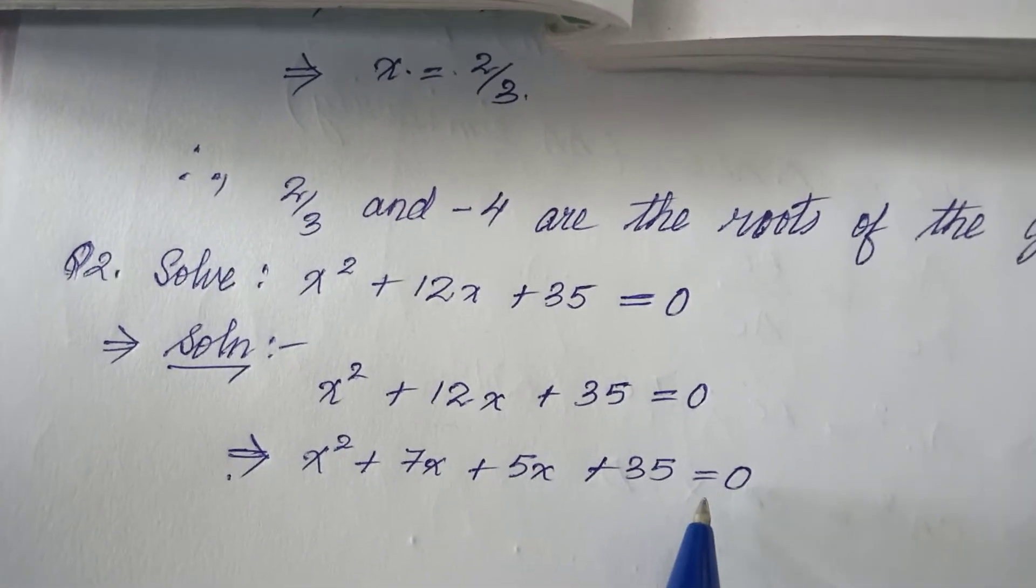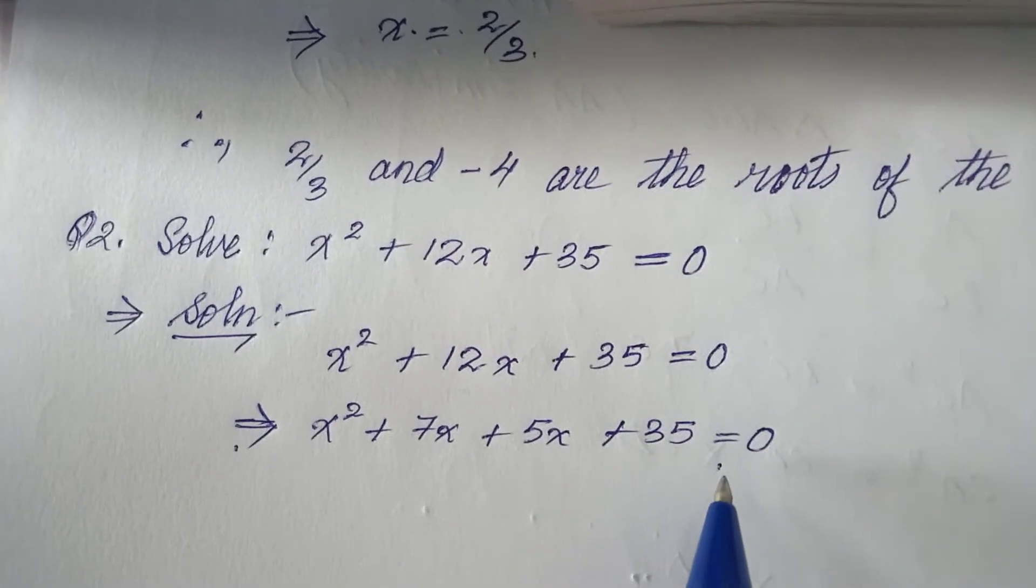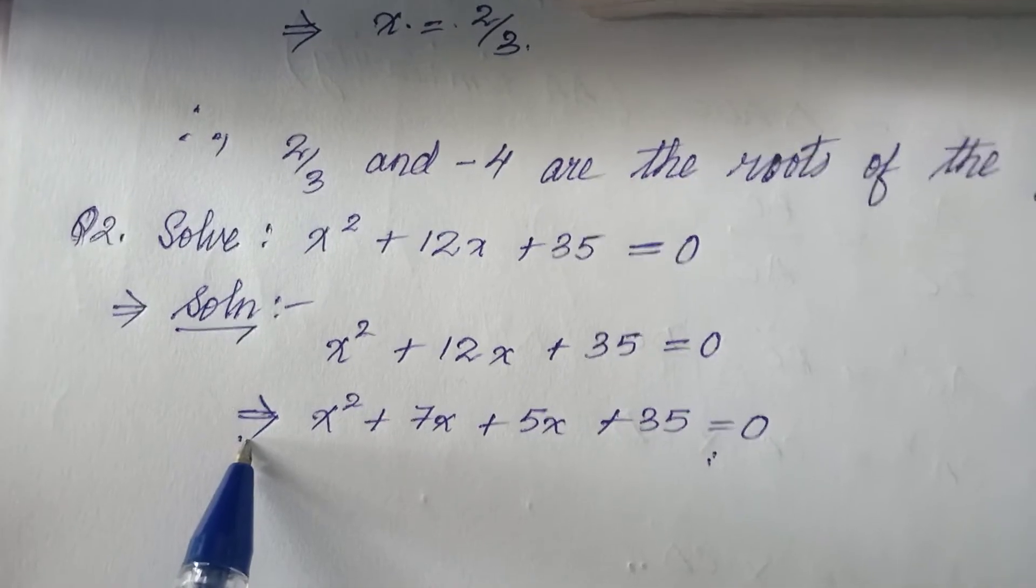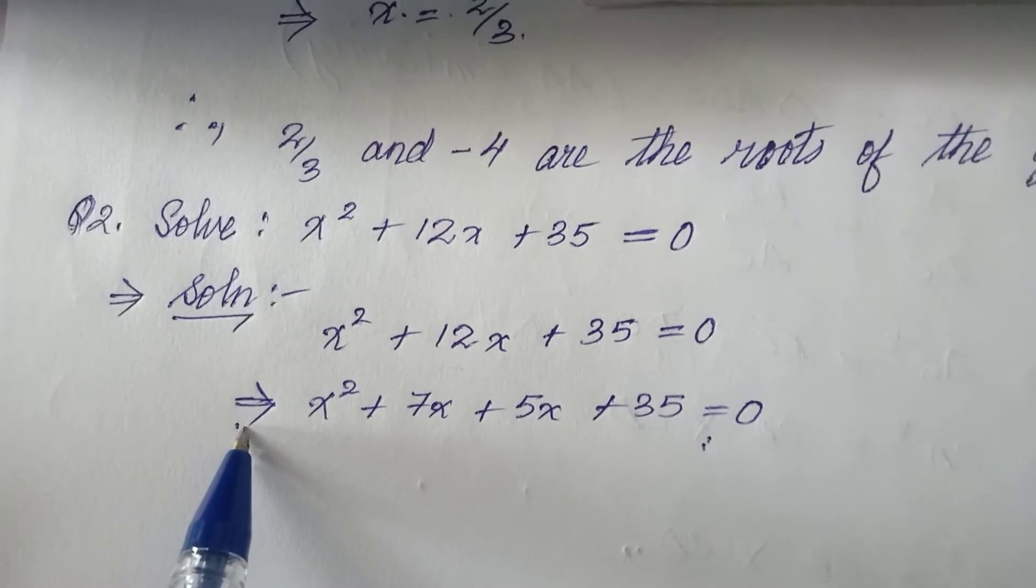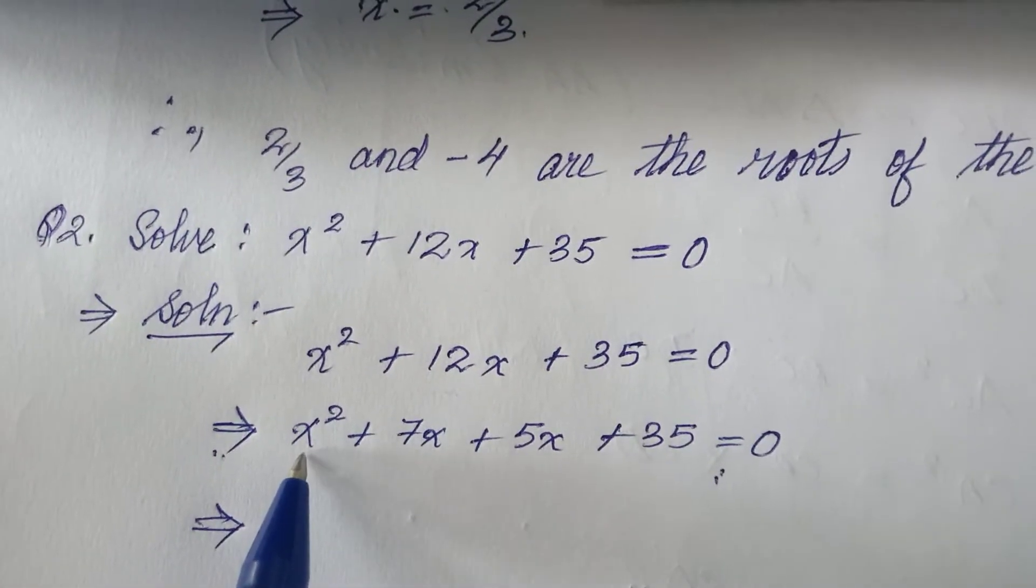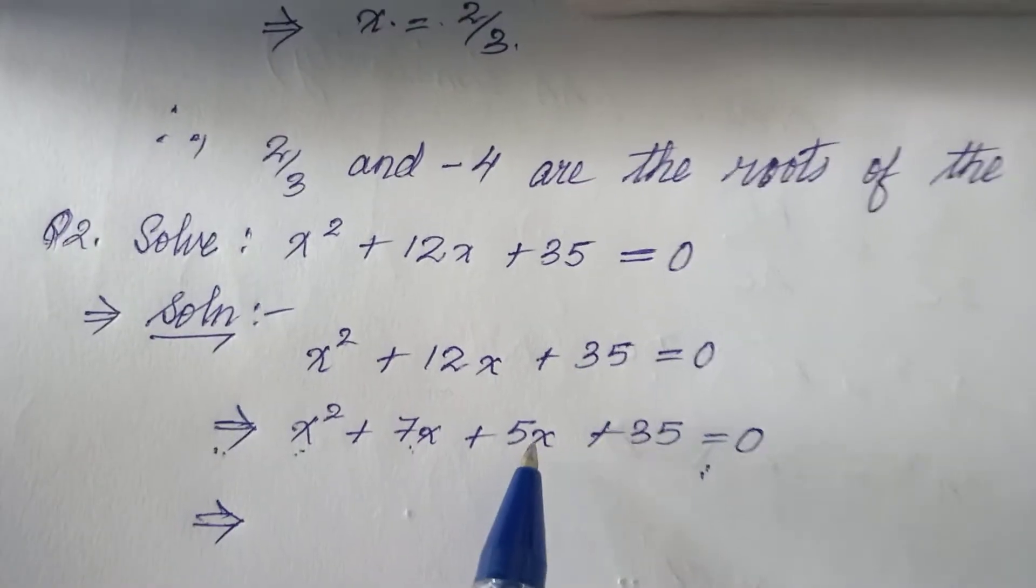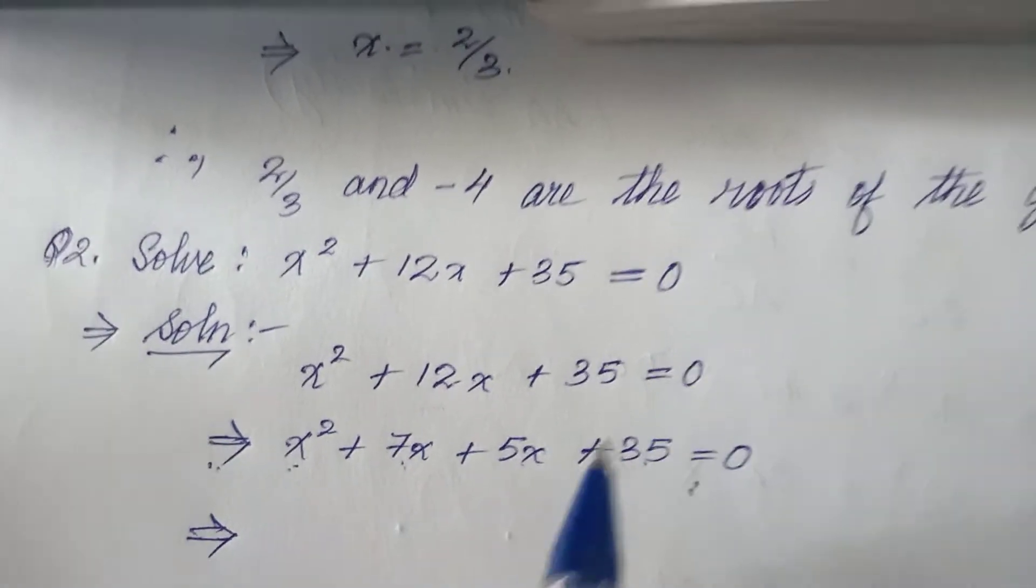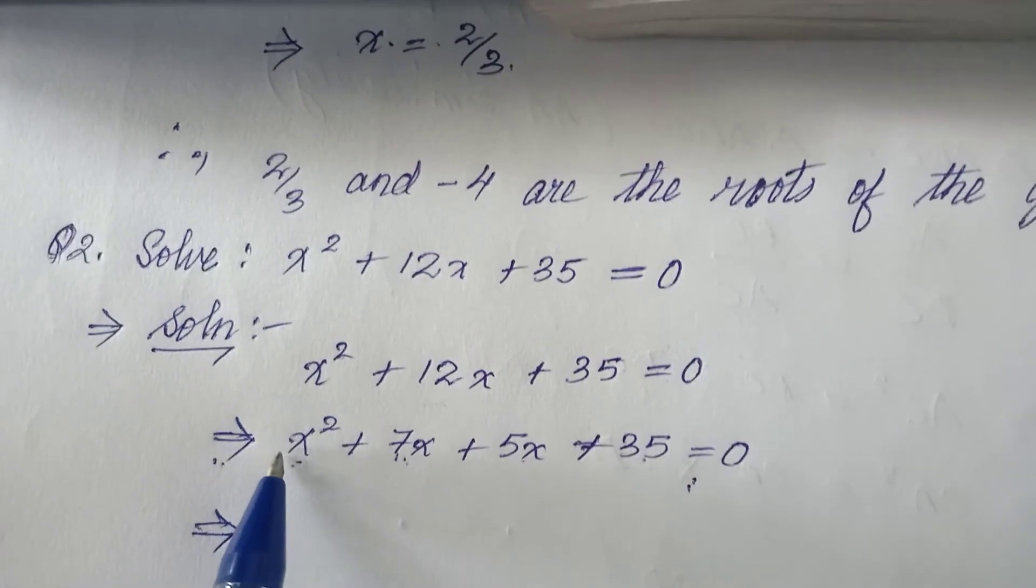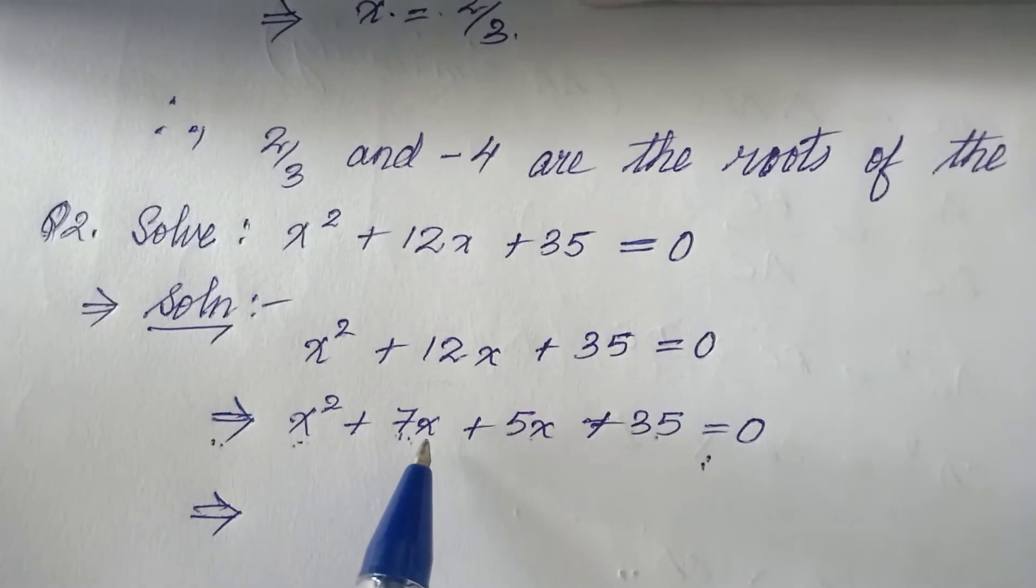Which implies - you have to use 'implies' here because there is an equal sign on the right hand side. Whenever you have an equal sign on the right hand side, never use equal sign here, always use implies. So which implies I have to take common from the first two, then from the last two.